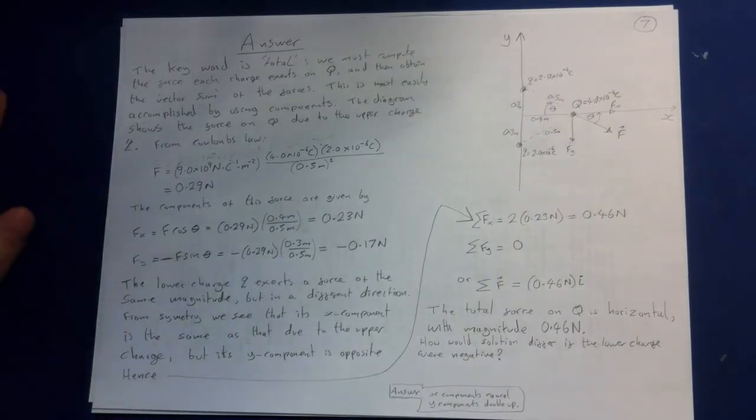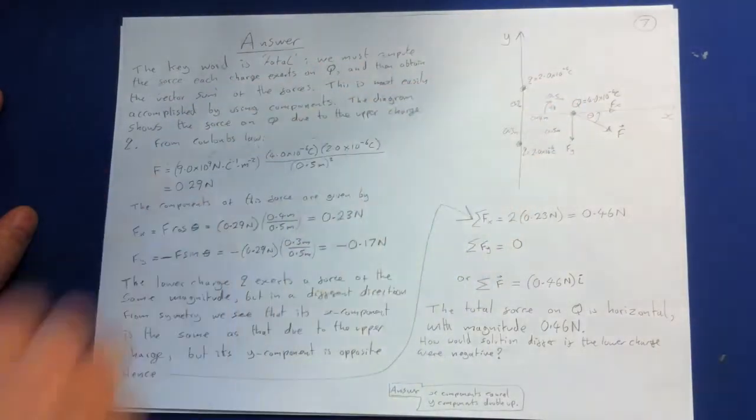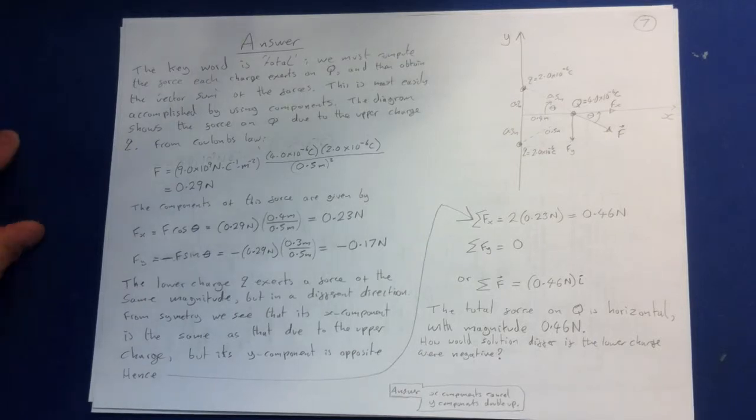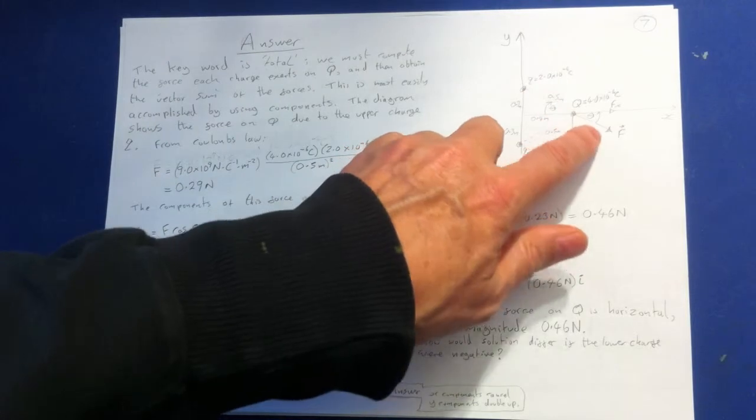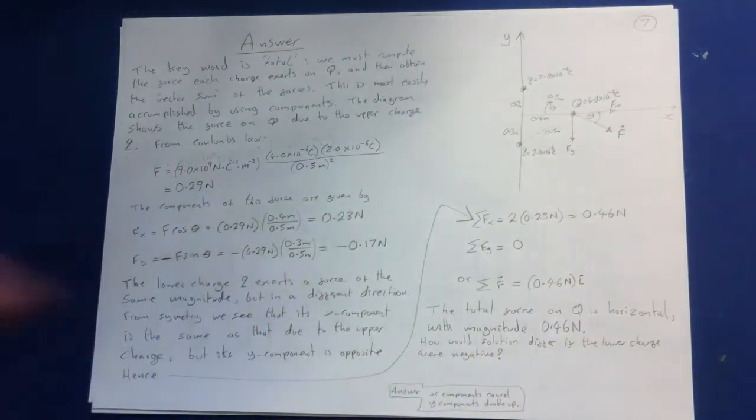So here's the answer. Now the key word is total. We must compute the force each charge exerts on Q, and then obtain the vector sum of the forces. This is most easily accomplished by using components, mathematical components. The diagram shows the force on Q due to the upper charge. So you can see there's a force here due to this upper charge Q, this force here. Now from Coulomb's law,